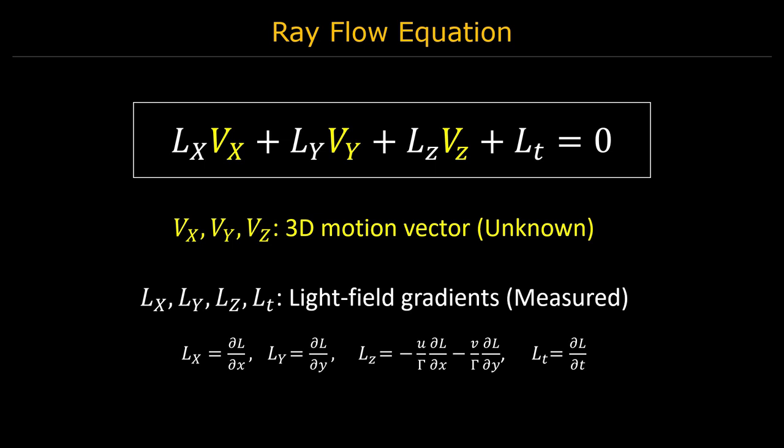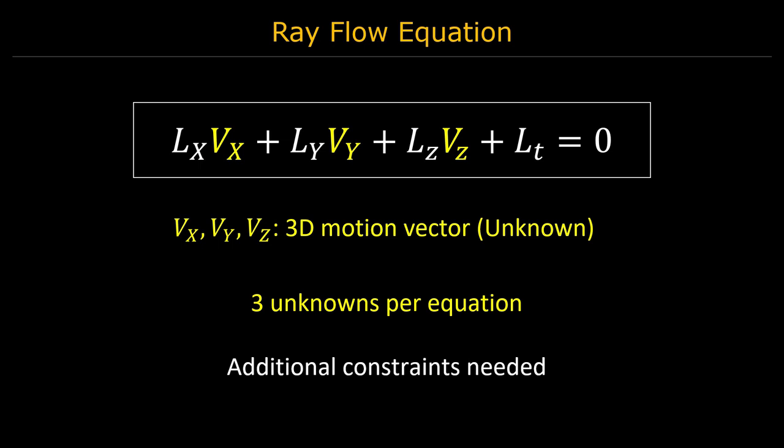This equation is under-constrained because there are three unknowns per equation. Therefore, we need to impose additional constraints to recover motion.